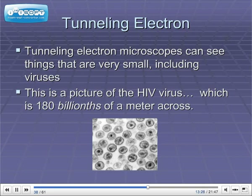Transmission electron microscopes can see things that are very small, including viruses. This is a picture of the HIV virus, which is 180 billionths of a meter across. That is extraordinarily tiny. All of these electron microscopes are super expensive.